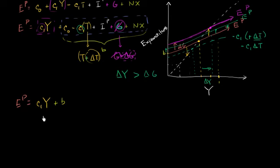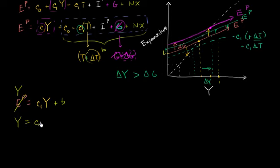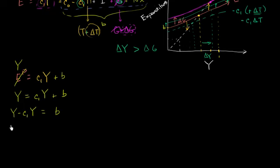We know an economy is in equilibrium when planned expenditures equal output. So let's set planned expenditures equal to aggregate output Y — which is also aggregate income. We then solve for equilibrium income: Y equals C1 times Y plus B. Subtracting C1 times Y from both sides gives Y minus C1·Y on the left, which equals B. We can factor out Y to get Y times (1 minus C1) equals B.